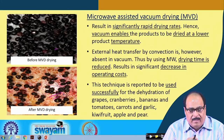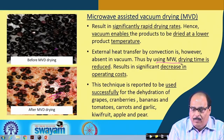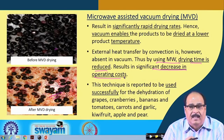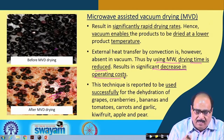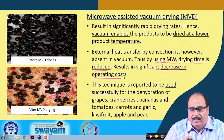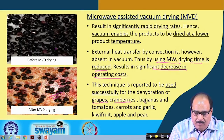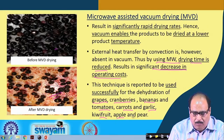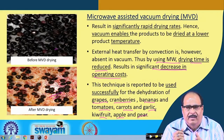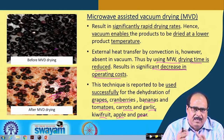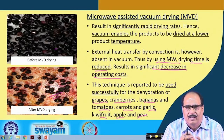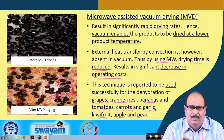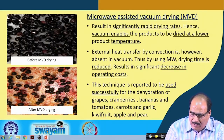Since external heat transfer by convection is absent in vacuum, using microwave drying significantly reduces drying time and results in a decrease in operational cost. Many researchers have successfully used microwave assisted vacuum drying for dehydration of grapes, cranberries, bananas, tomato, carrot, garlic, kiwi fruit, apple, pear, and other fruits — mostly those with heat-sensitive components or with low glass transition temperature, where conventional thermal drying and dehydration becomes difficult.